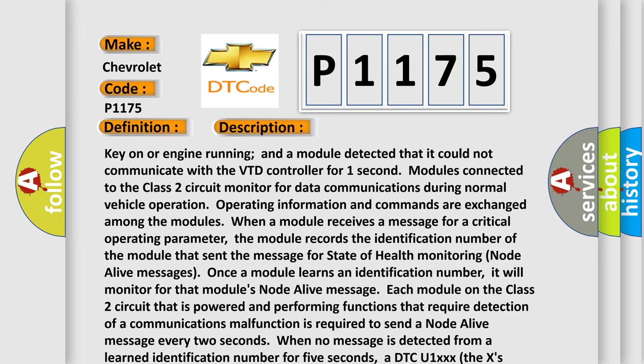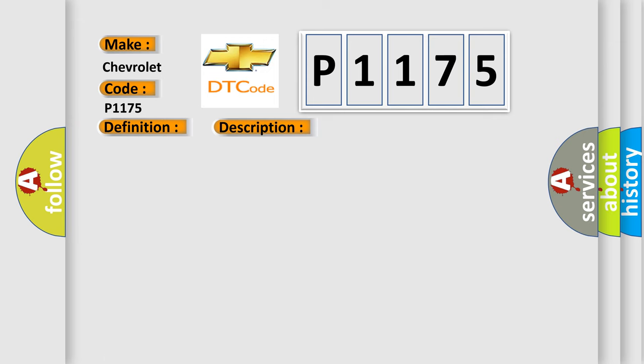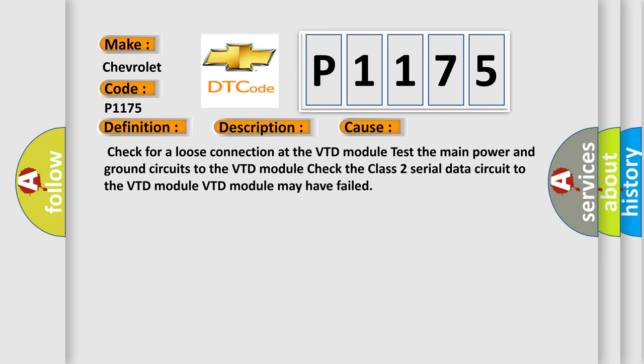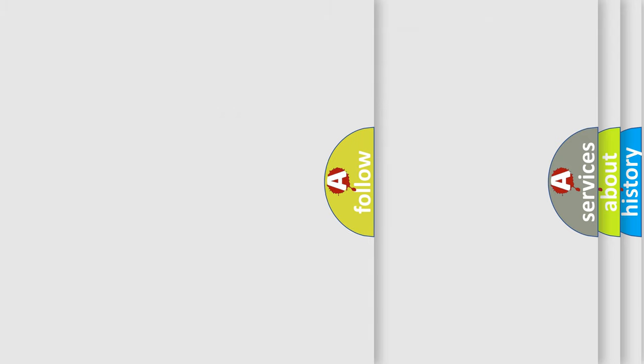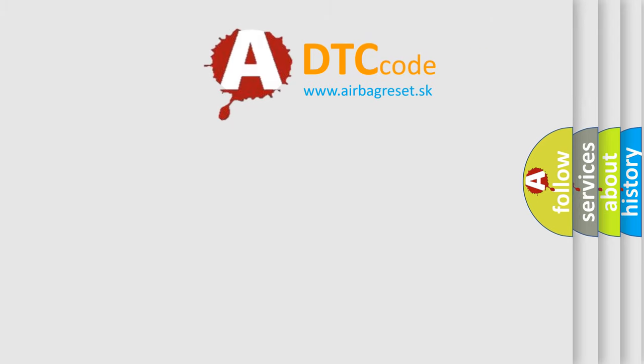This diagnostic error occurs most often in these cases: check for a loose connection at the VTD module; test the main power and ground circuits to the VTD module; check the Class 2 serial data circuit to the VTD module; or the VTD module may have failed. The Airbag Reset website aims to provide information in 52 languages.